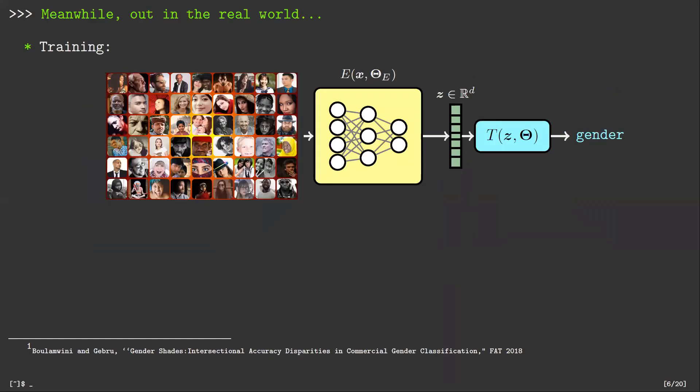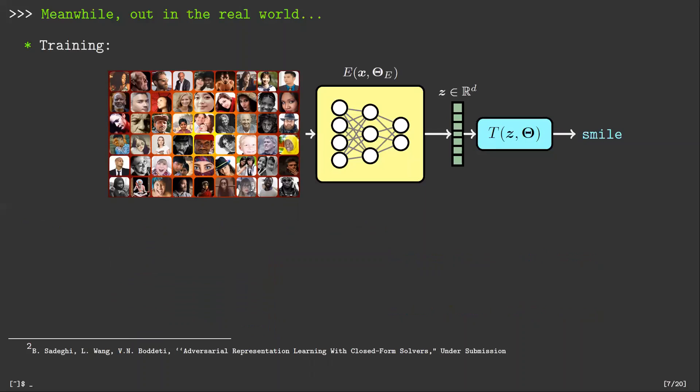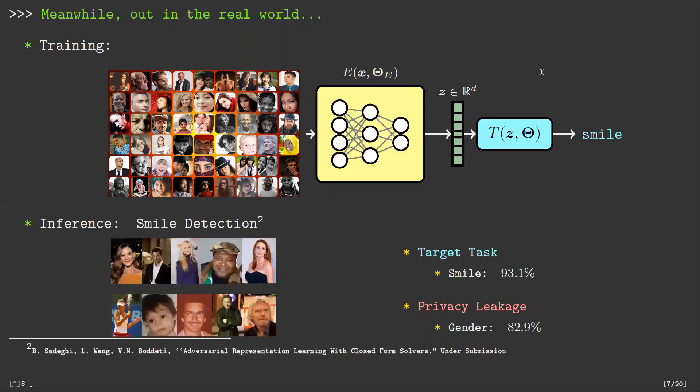However, in the real world, we have limited control on the training data. For instance, a bias in Microsoft's commercial gender classification system has been pointed out. It performs with more than 99% accuracy on light faces, while the accuracy for darker faces amounts only to about 87%. As an example for privacy leakage, consider the naive representation learning for smile detection on IMDB faces. It leaks considerable information on the gender of images as well.